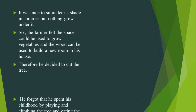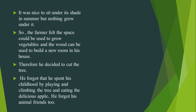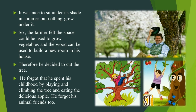So the farmer felt the space would be used to grow vegetables and the wood could be used to build a new room in his house. Therefore, he decided to cut the tree. He forgot that he spent his childhood playing and climbing the tree and eating the delicious apples. He forgot his animals and friends too.